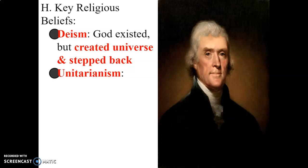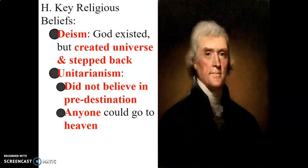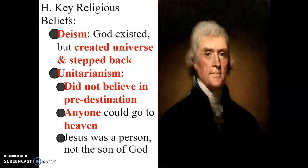We have unitarianism. They did not believe in predestination — this was a big deal. If you remember indulgences, where people would pay to get their sins forgiven, which favored the rich, unitarianism got rid of predestination, basically meaning everybody is allowed to go to heaven. This concept was very popular with Americans because all men are created equal — that was in our Declaration of Independence. Unitarianism also held the belief that Jesus was a person, not the son of God, and that human beings can also be good. Power to the people.